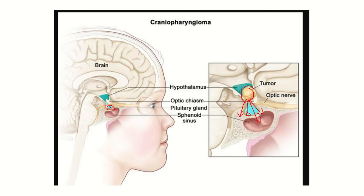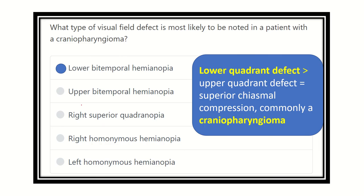In contrast, in the case of a pituitary tumor, the compression comes from below, pushing the optic chiasm upward. So in the case of a pituitary tumor, there will be development of upper bitemporal hemianopia. This distinction in compression direction is very important to remember for the exam.